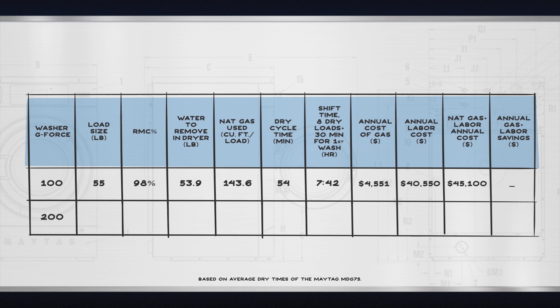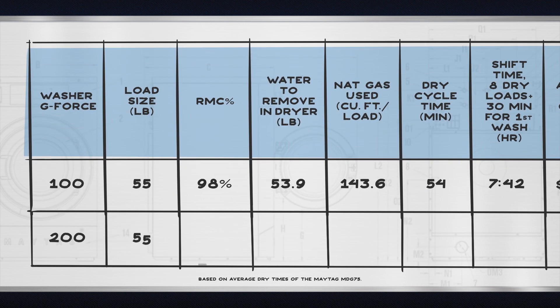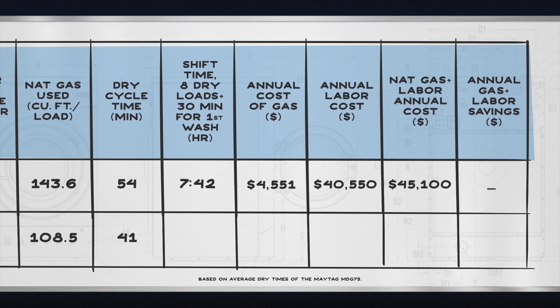Now what happens if you use a washer with 200 g's of force? At this higher extraction force, the same load will now retain about 40 pounds of water, which means the dryers will use less natural gas and will need less time to dry each load. As a result, the total shift time is reduced to six hours, and your total annual cost comes in at about thirty-five thousand two hundred nineteen dollars, with a savings of almost nine thousand nine hundred dollars compared to the 100 g washer.